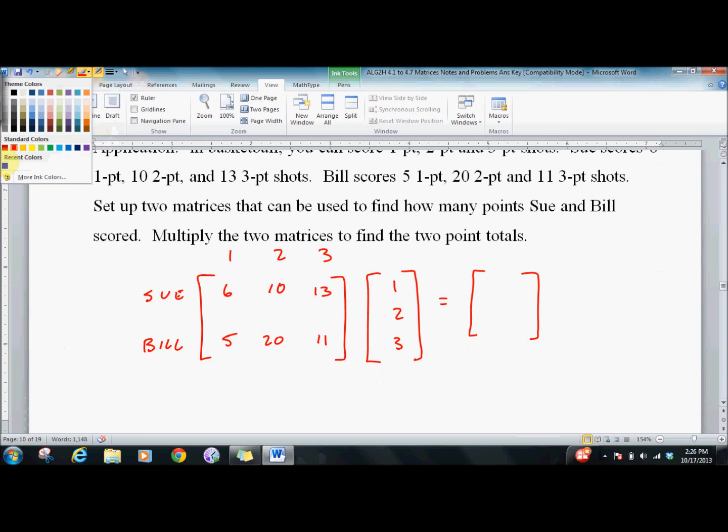So when we multiply them, what are we actually doing? Well, six times the one point plus ten times the two point plus thirteen times the three, we're just multiplying out the point total. So we get thirty-nine plus twenty is fifty-nine plus six is sixty-five. And then here we get forty plus thirty-three is seventy-three plus five is seventy-eight. And that's Bill's total points.